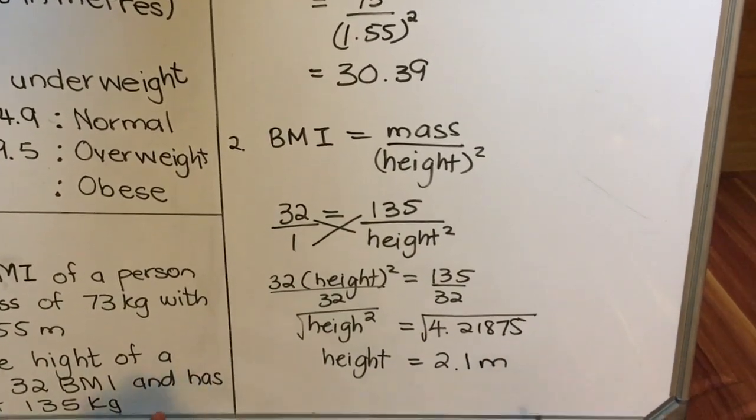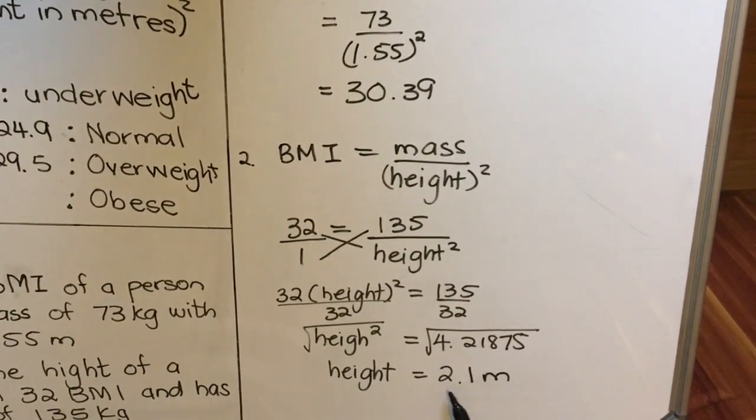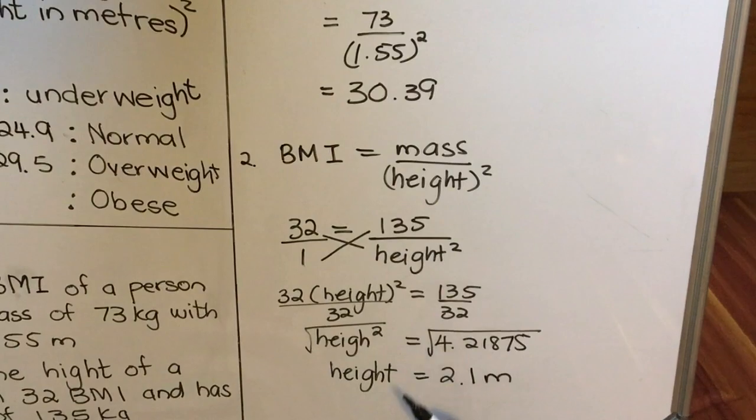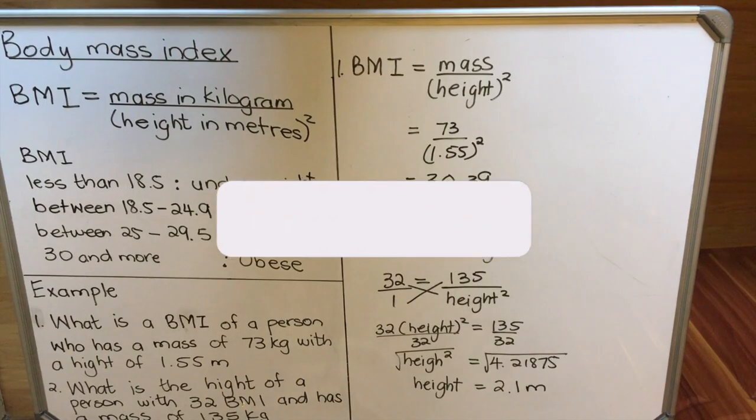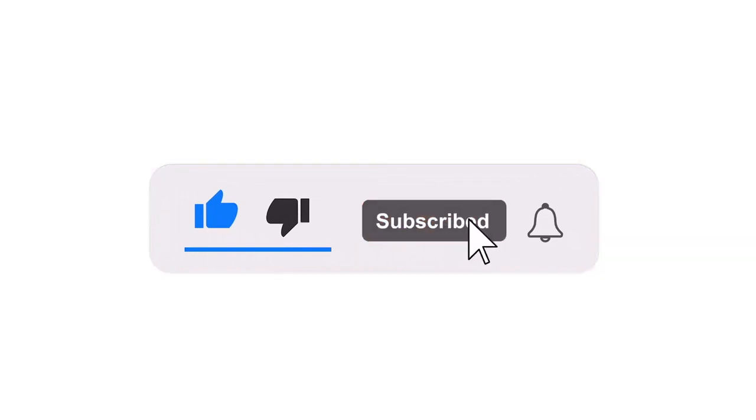You remember the height is calculated in meters, so this is quite a tall person—2.1 meters. This is how you calculate. Please practice. This section is not that hard. This is the end of the lesson. Thank you for watching.